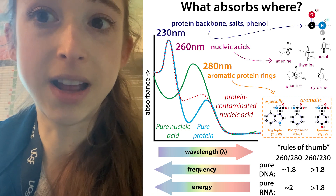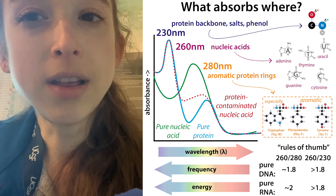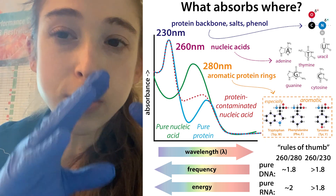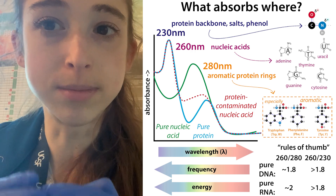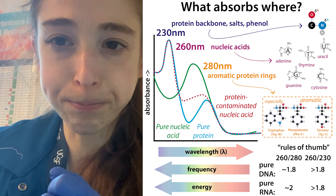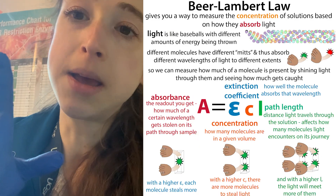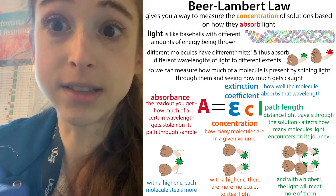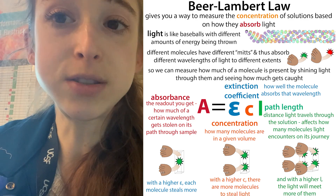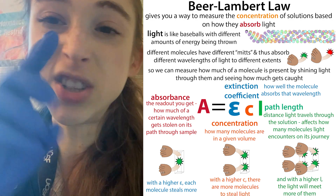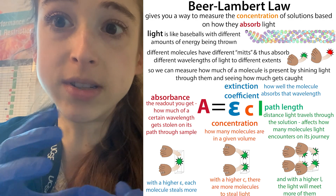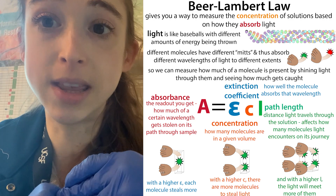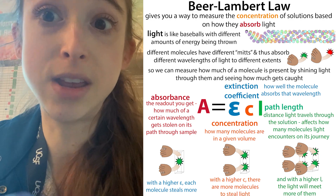We can do this because biological molecules absorb different wavelengths of light more strongly. They each have a characteristic spectrum where they absorb different wavelengths to different amounts, and there will be one wavelength where they absorb the most. How much light is absorbed is going to depend on a few things: how much each copy of that molecule absorbs light, how many copies there are, and how many copies the light interacts with as it runs through your solution.